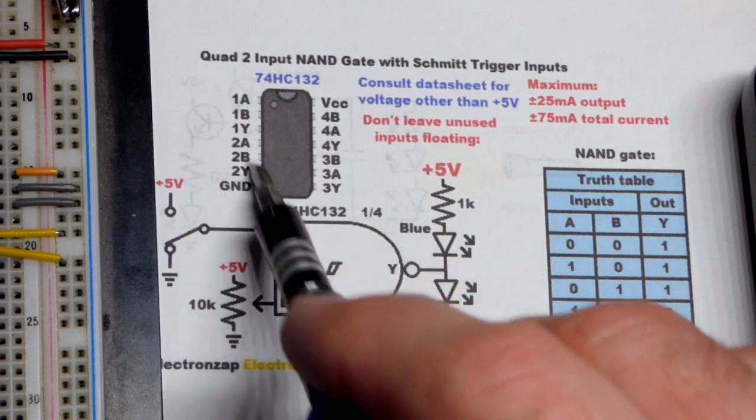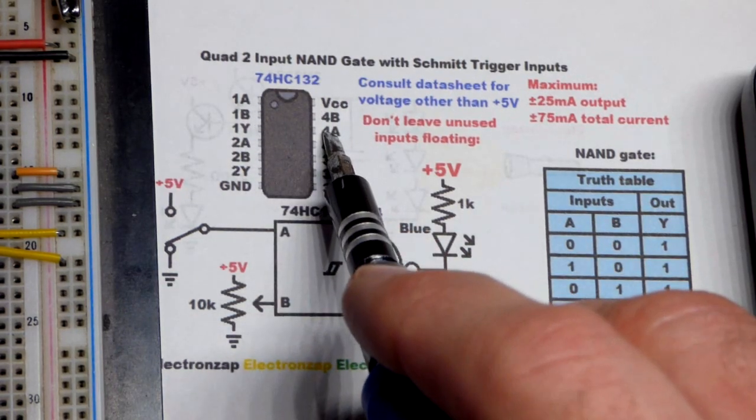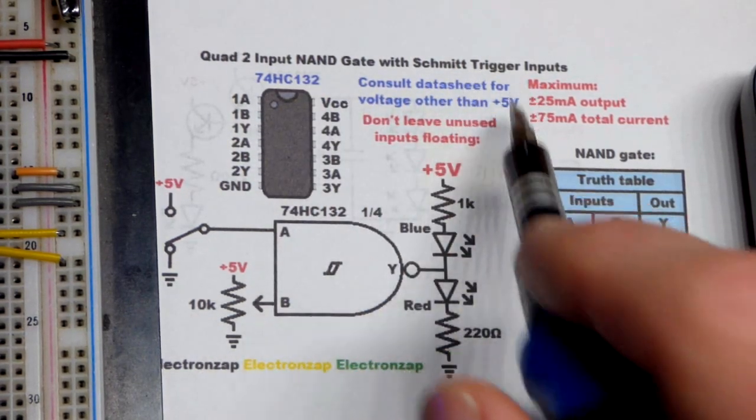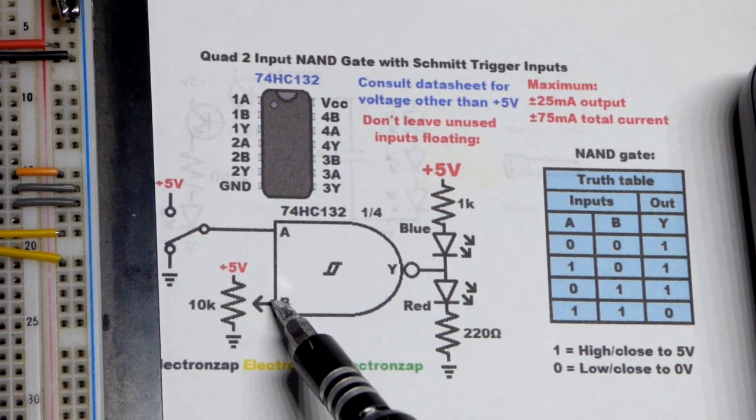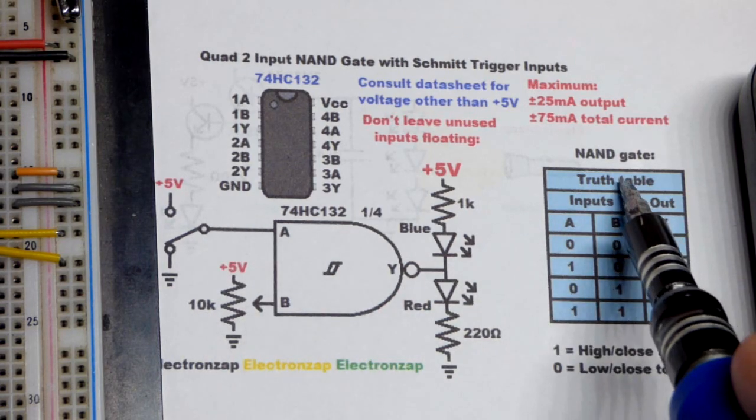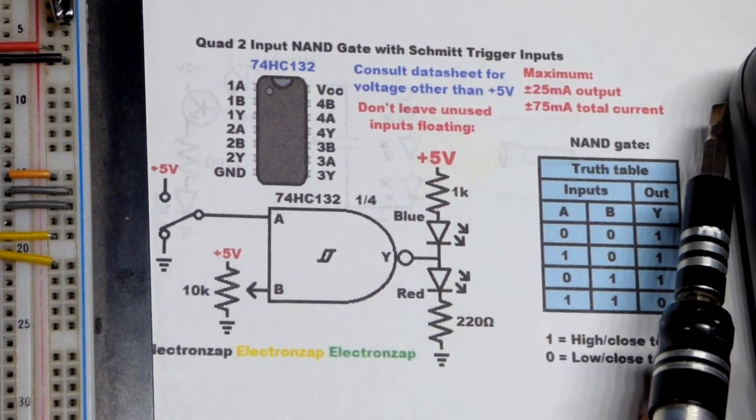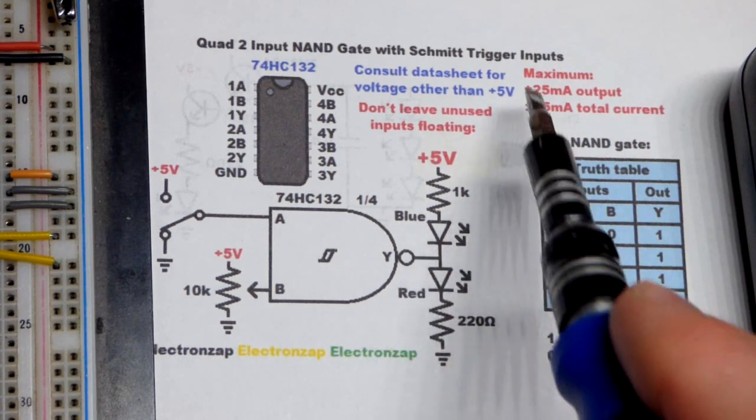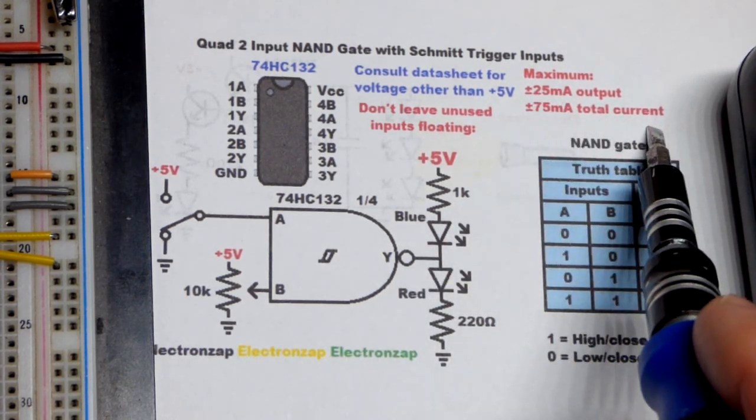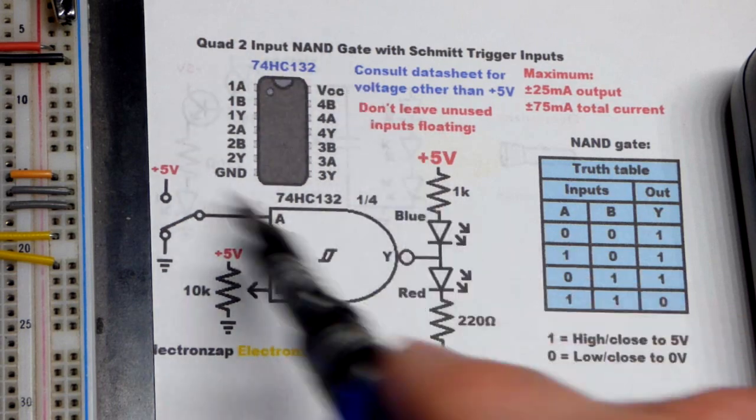And then the 132 is the four or quad NAND gates with Schmidt trigger. That's important. Right there, 132. So we had the trim pot going to one input and the jumper going to the other. Here is the truth table. So yeah, 25 milliamps of current for the output, but 75 milliamps total. So that's the entire integrated circuit.